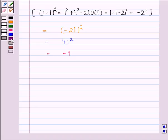Thus our required solution is minus 4. So we have expressed the given complex number in the form a plus iota b. Here a is equal to minus 4 and b is equal to 0.